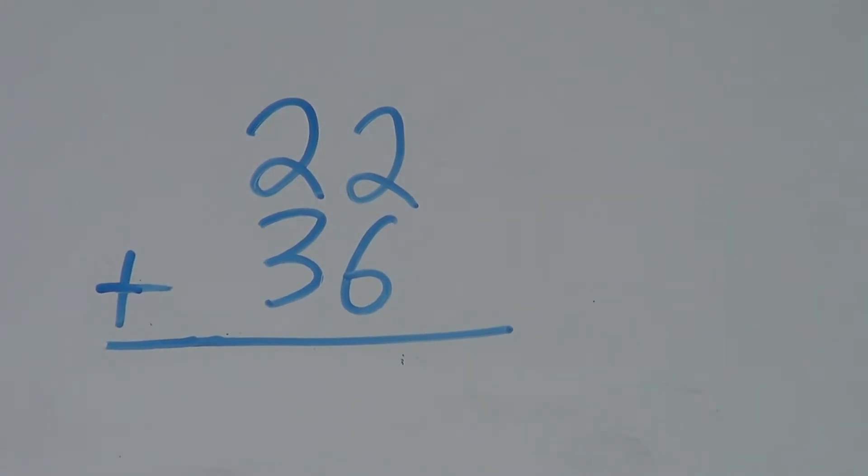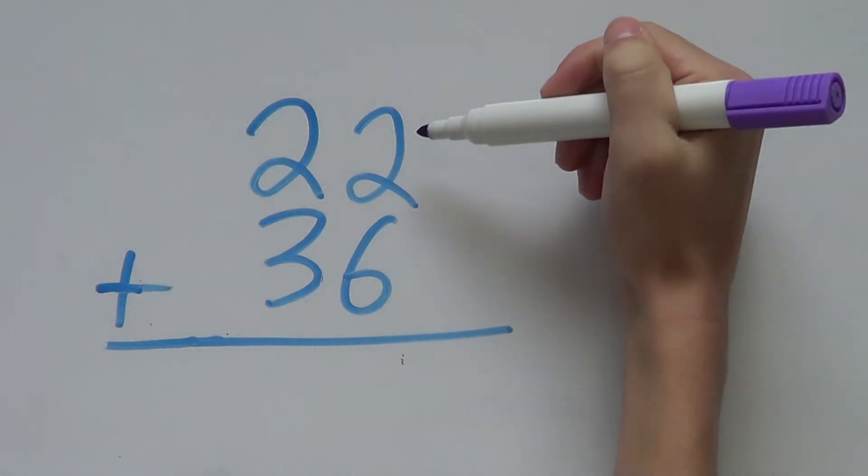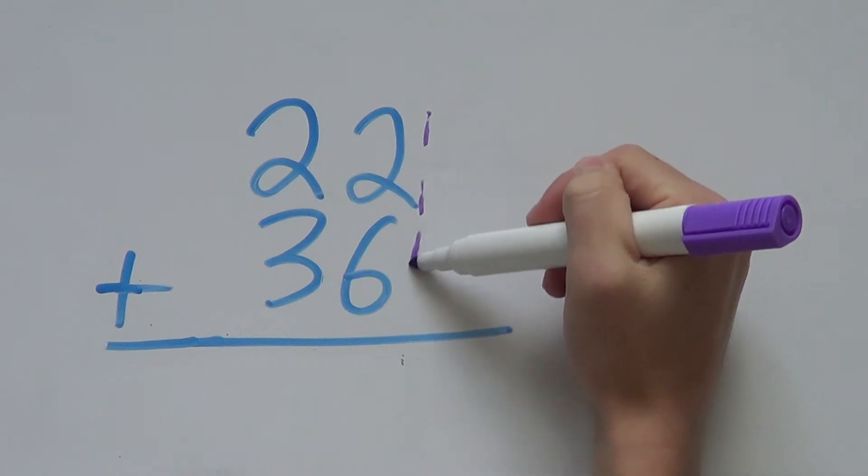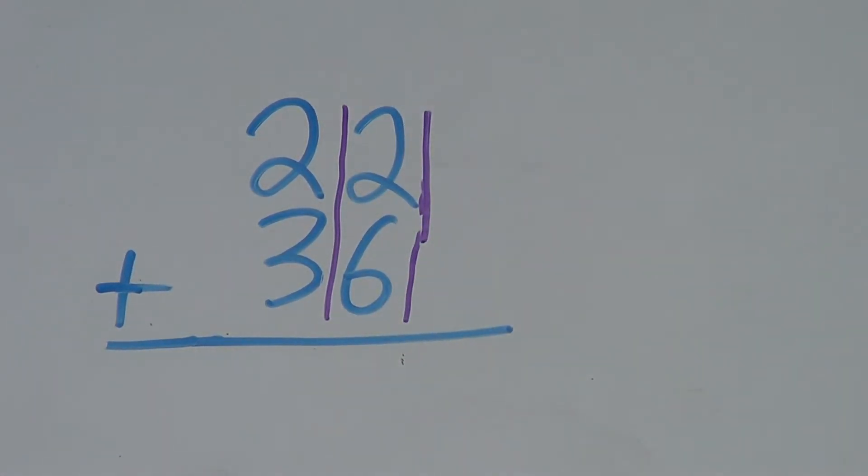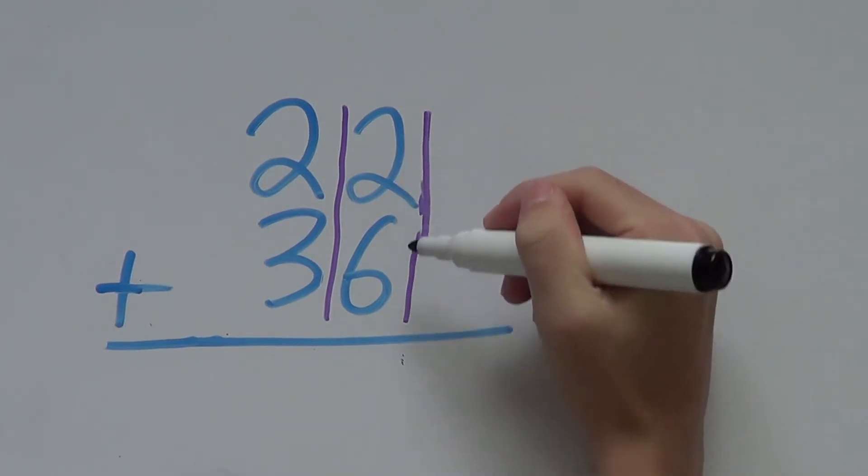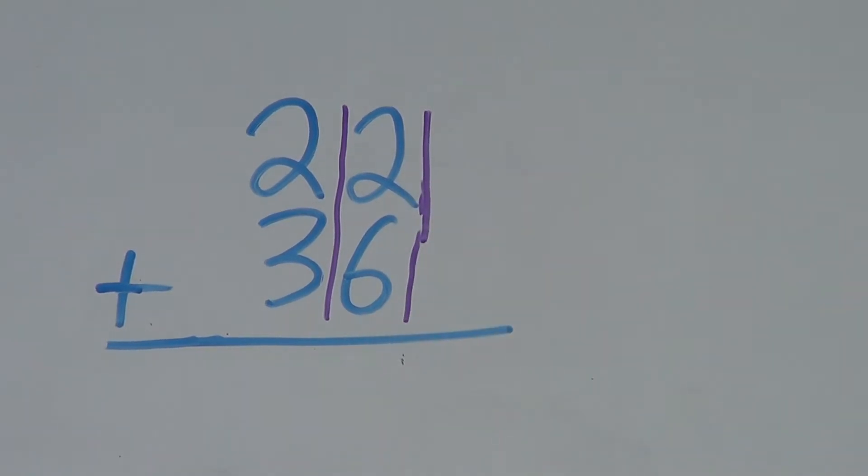To add the two numbers together, what we do is we add the columns starting from the back. So our first column is 2 and 6. So we add 2 plus 6. 2 plus 6 is 8. We write the solution right below it, keeping all the numbers on top of each other.